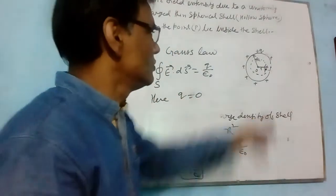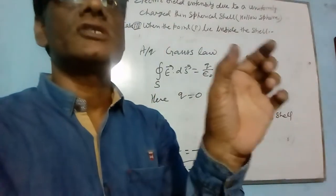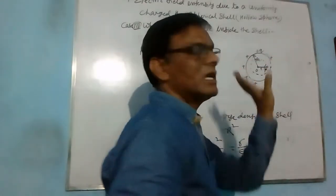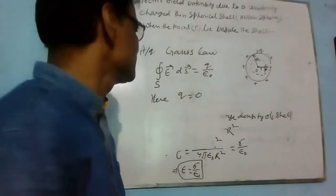Because, you know, Gaussian surface encloses no charge, because charge is outside the spherical shell.